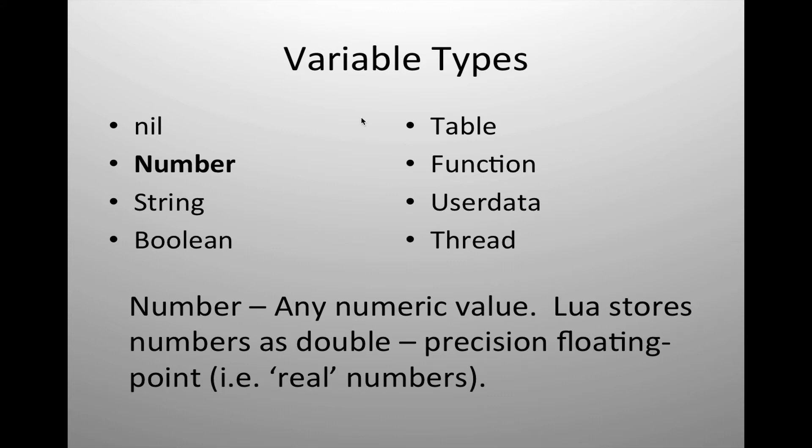The number data type is used to store all numeric values. It is a double precision floating point real number for storage that includes for all types, including what we would normally consider for an integer or other data precision types for numeric values. Internally, Lua stores it all as a 64-bit double precision floating point number.